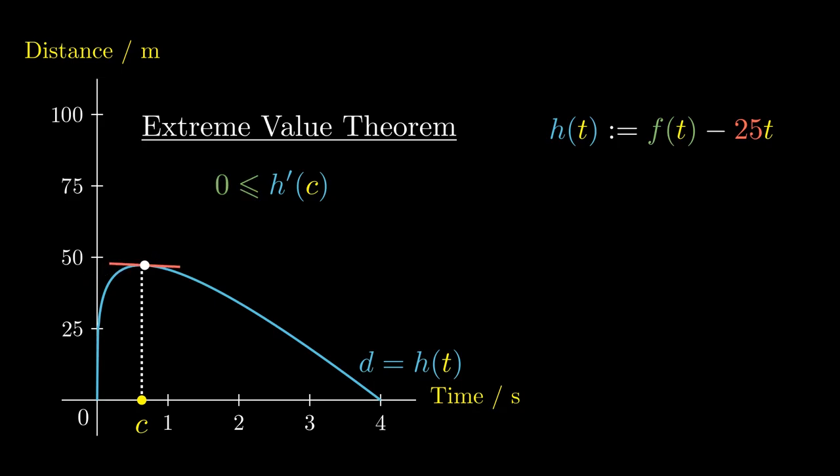On the other hand, if we consider points to the right, the gradient of the curve is negative. This means that h prime of c is at most zero. But since the gradient at c is at least zero and at most zero, we must conclude that the gradient at c equals zero exactly.